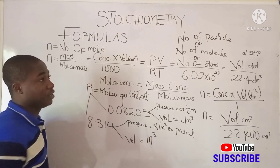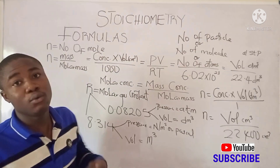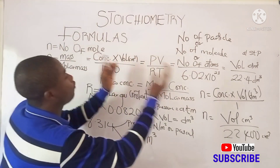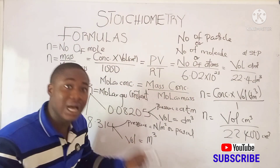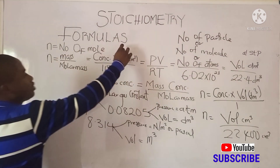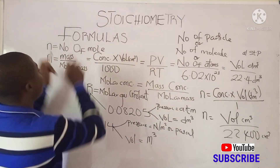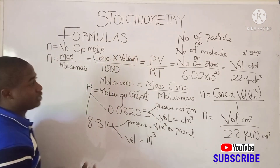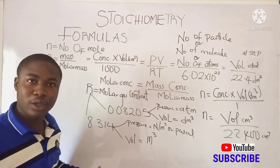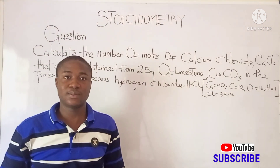Now we can see the problems under stoichiometry and the formulas are arranged for reference. It must be noted that these formulas can be related together in a particular question. Since n = mass / molar mass and also n = concentration × volume / 1000, both can be equated to each other. This is how these formulas are used together.